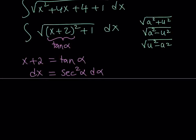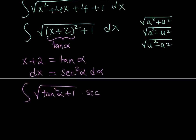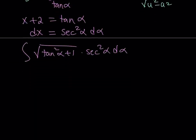Now we plug this in. We get the square root of tangent squared alpha plus 1 under the radical, multiplied by secant squared alpha d alpha. Since tangent squared alpha plus 1 equals secant squared, the square root gives us secant alpha. Multiplying secant alpha by secant squared alpha gives us secant cubed alpha.